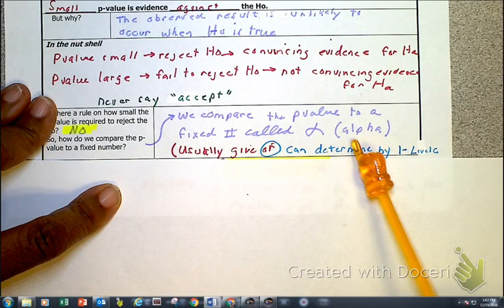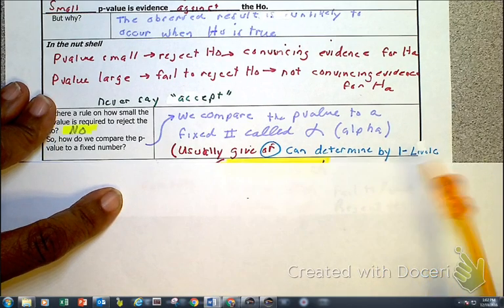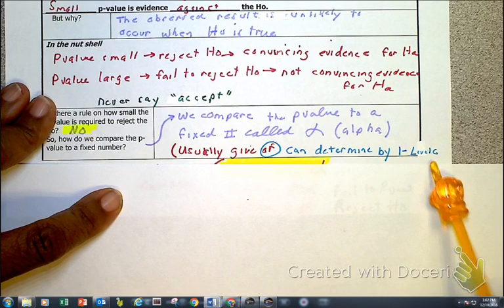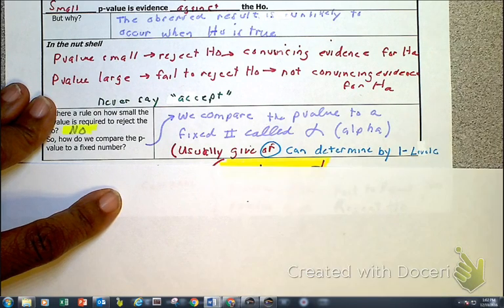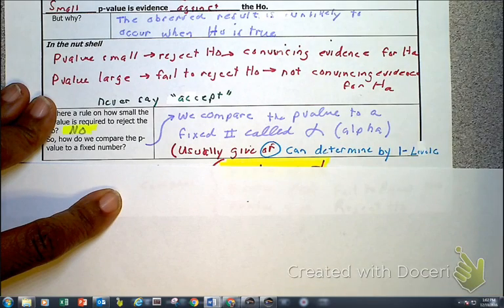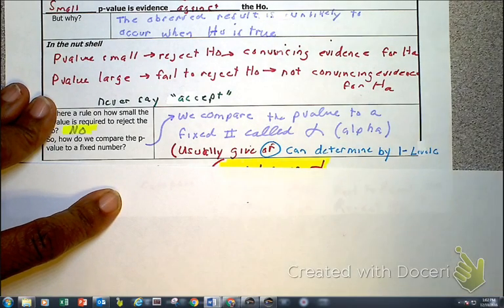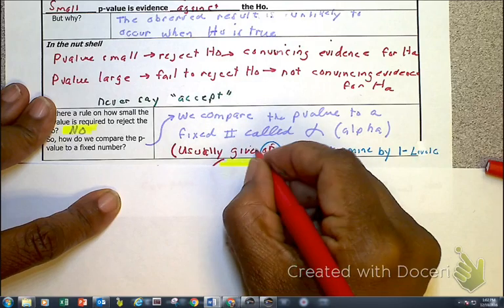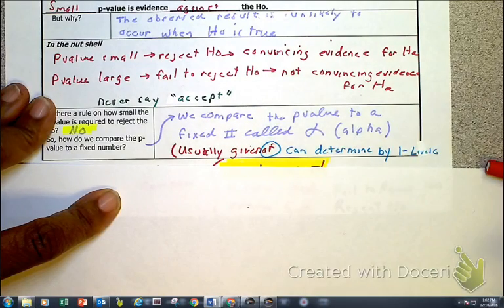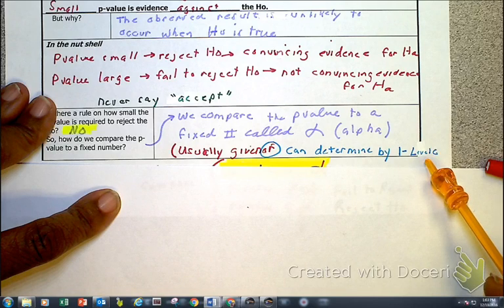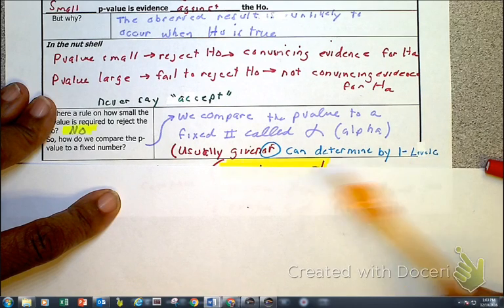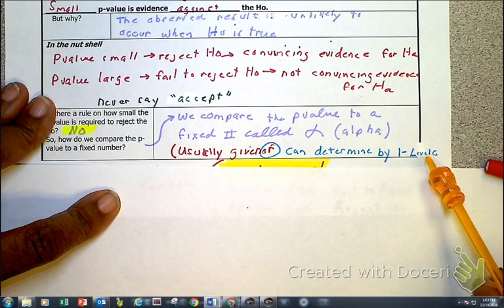And what is an alpha level? An alpha level is literally 1 minus the level C. An alpha level is usually given to us, or we can determine it by looking at our confidence level. And as you can see right here, the confidence level is 1 minus, I mean yes, the alpha level is 1 minus the level C. That gives us the alpha level.